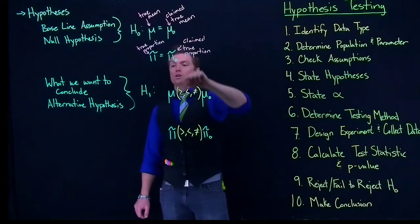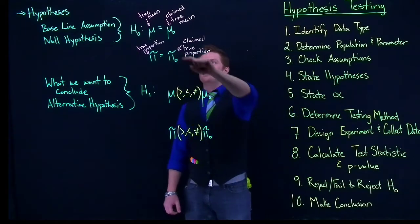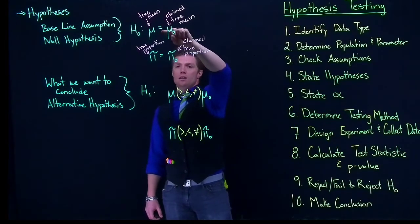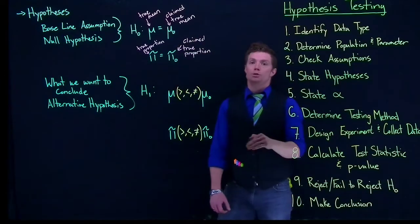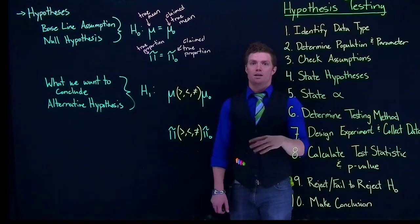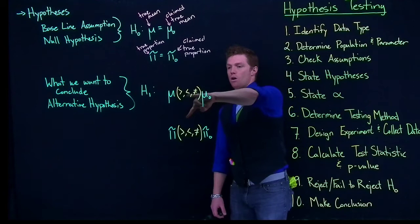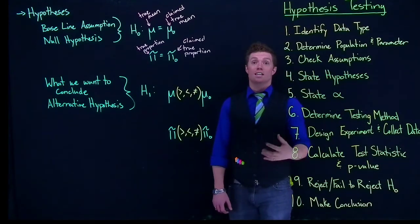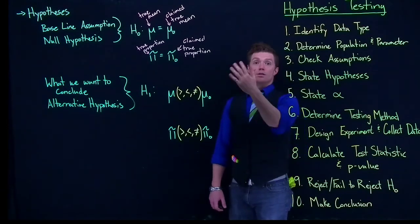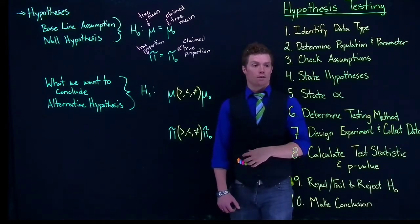And remember, the null and the alternative, they are identical. They are always identical, except for in the null hypothesis, it will always be an equal sign. Always. If there's anything other than an equal sign up there, we're going to have a problem. But down here, we are always going to have some sort of inequality. And that's the only difference between our null hypothesis and our alternative hypothesis.